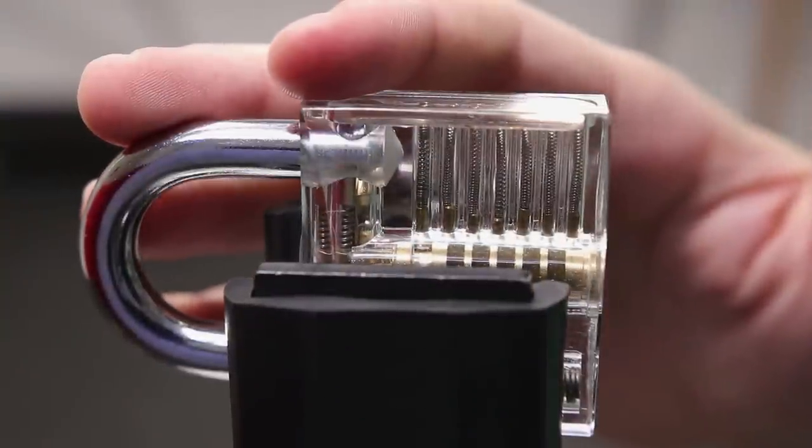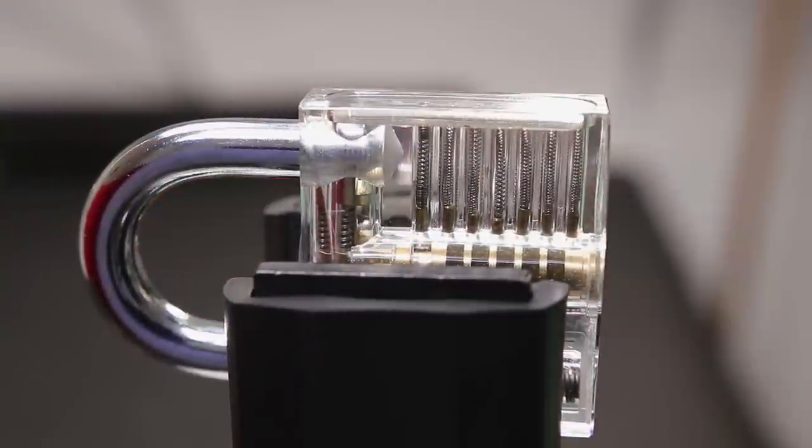Alright, so the lock that I have in front of us here is a clear acrylic padlock. This is one of the first locks that many people first learn to work on when they are learning to open up locks. It provides a really great visual aid so you can really conceptualize what's going on.